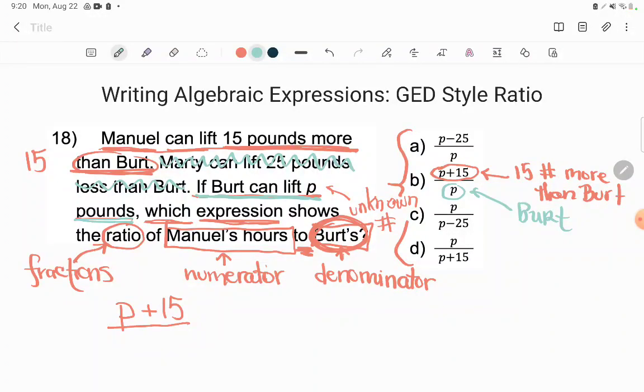And that's it, guys. You guys freak out because you think I need you to do something with these letters, to do some math, some unknown kind of crazy math. Because you can't do anything with this. You don't know what P is. You can't add 15. You can't reduce the fraction. You can't divide. There's nothing you can do except to write this expression. The expression of manuals hours over Burt's hours. And I'm literally done here. All right. Awesome. So B is the correct answer.